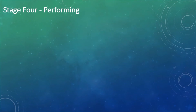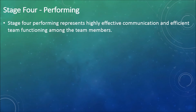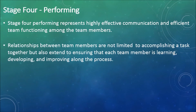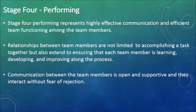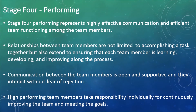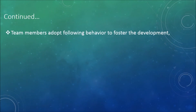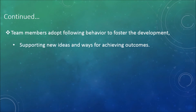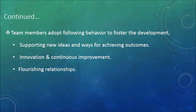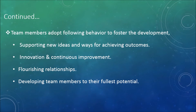Stage 4: Performing. This stage represents highly effective communication and efficient team functioning. Relationships between team members extend beyond accomplishing tasks to ensuring each member is learning, developing, and improving. Communication is open and supportive and members interact without fear of rejection. High-performing team members take individual responsibility for continuously improving the team and meeting goals. Team members adopt behaviors such as supporting new ideas, innovation and continuous improvement, flourishing relationships, and developing team members to their fullest potential.